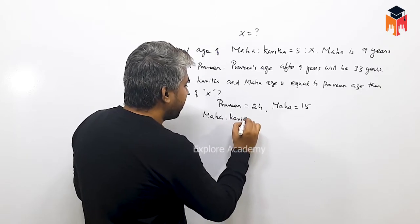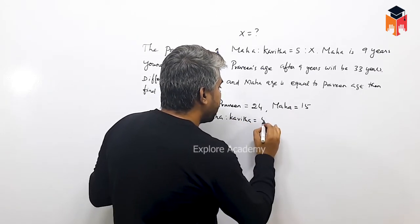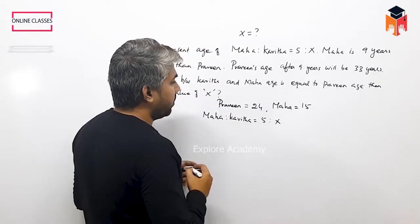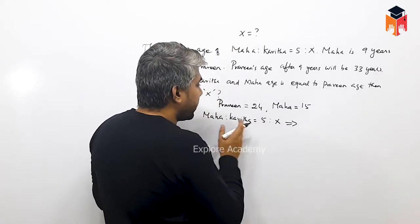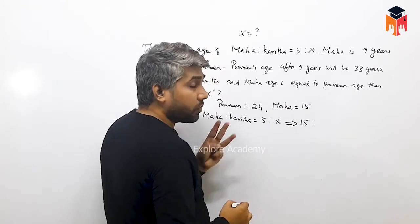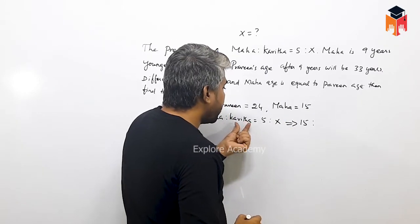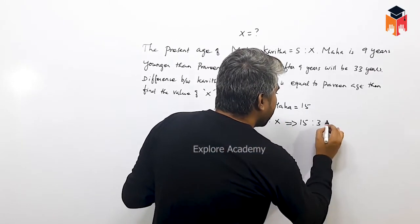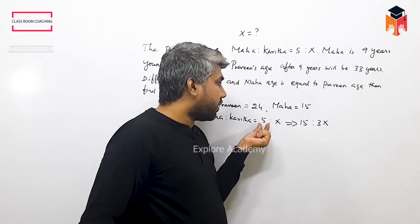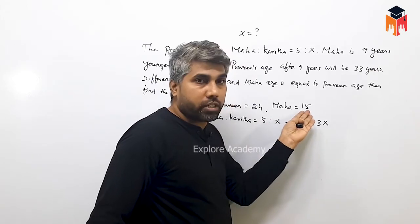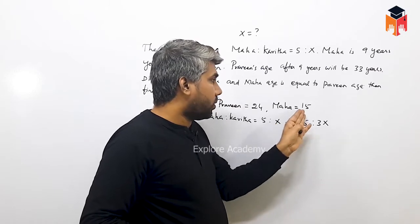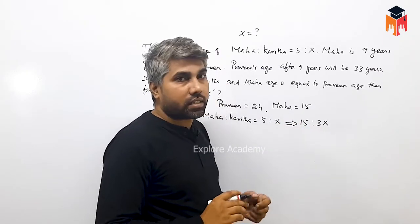Maga and Kavitha — this ratio is 5 to x. Maga's age is 15. In the ratio 5 to x, Maga corresponds to 5 and Kavitha corresponds to x. Since Maga is 15, we multiply: 5 times 3 is 15, so Kavitha is 3x.